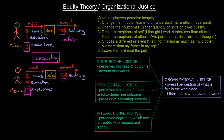When employees perceive some inequity, there are six reactions according to equity theory. Reaction number one: change their inputs — less effort if underpaid, more effort if overpaid. So if Mike finds out he is getting less output from the job, he will probably no longer work eight hours but maybe seven hours, and this way it becomes more balanced.